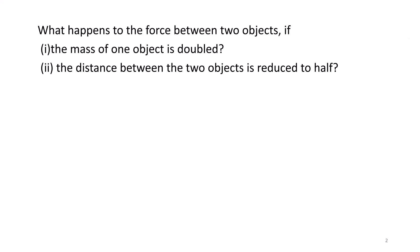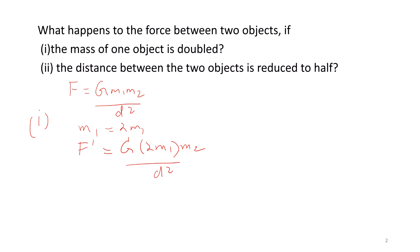What happens to the force between two objects if the mass of one object is doubled? We know F = G·m1·m2/d². If m1 becomes 2m1, then F' = G·(2m1)·m2/d² = 2·(G·m1·m2/d²) = 2F. So if one mass is doubled, the force also doubles, since force is proportional to mass.